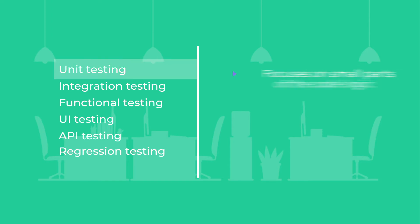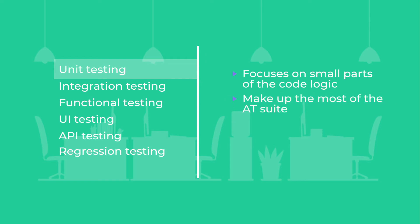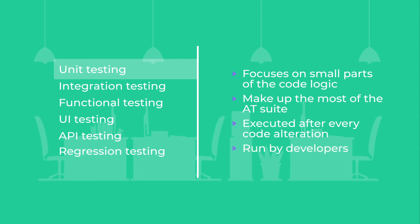Unit testing focuses on small parts of the code logic. It checks the code functionality without having any dependencies. Ideally, unit tests should make up the biggest portion of the automated suite. They should be executed every time a piece of code is changed or added. Running unit tests is a task for developers.